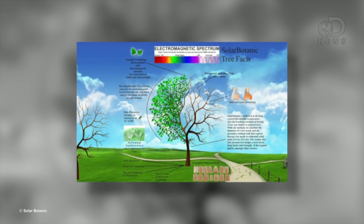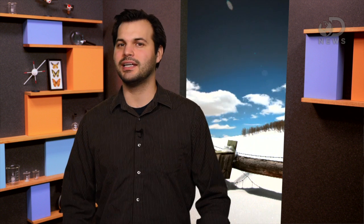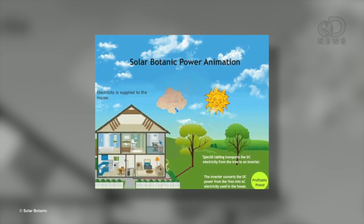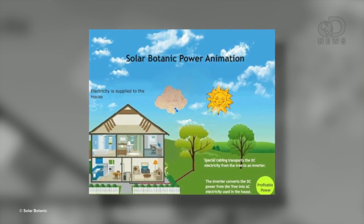Using photovoltaics, thermoelectrics, which is electricity from heat, and piezoelectrics, which is energy from pressure, Solar Botanic wants to create a power plant. The leaves are both solar and thermal panels, and when they blow in the breeze, they'd harvest wind energy.